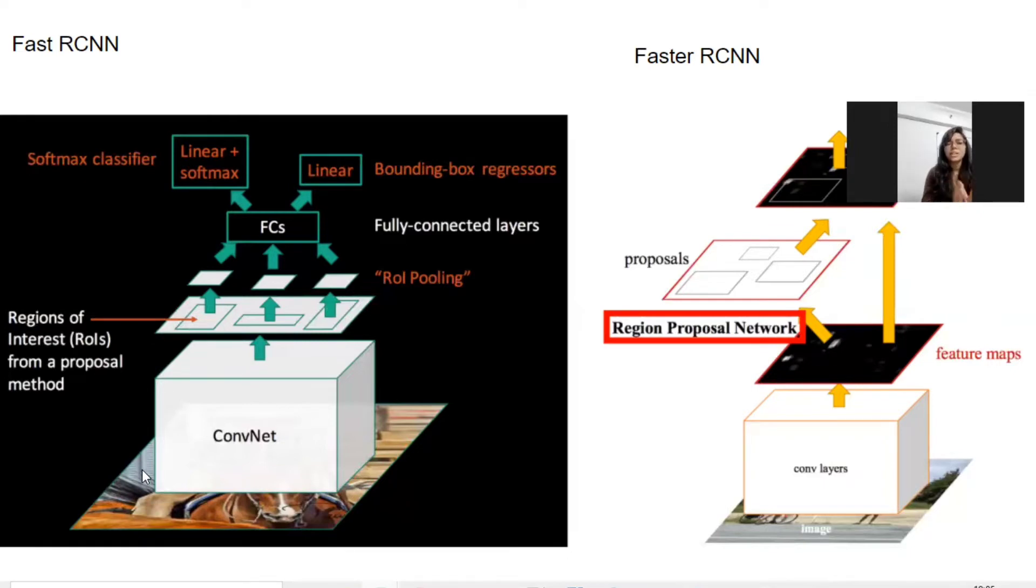And once the region of interest is getting created, it has to pass through ROI pooling. What ROI pooling layer does is, based on the next layer, which is the fully connected layer,